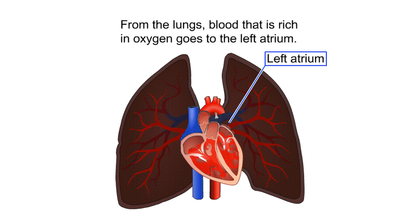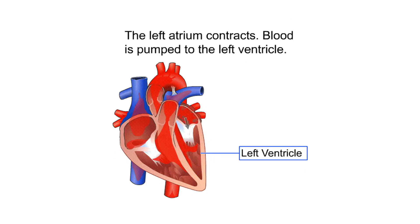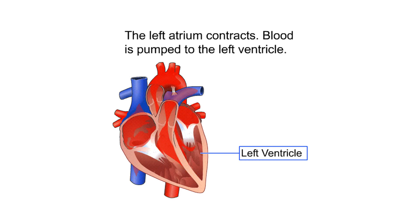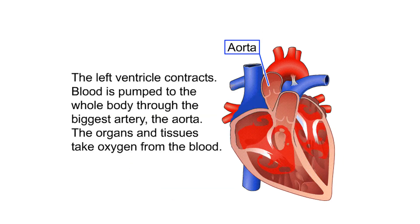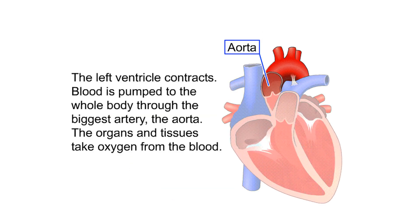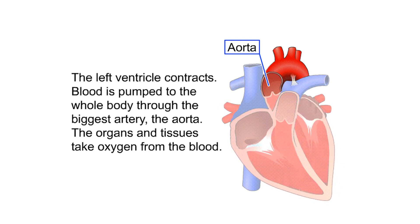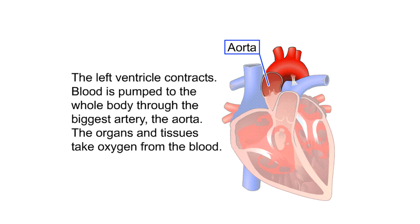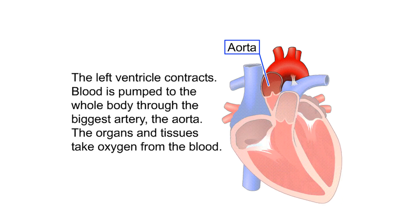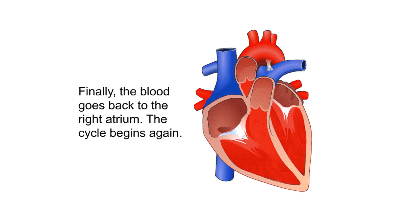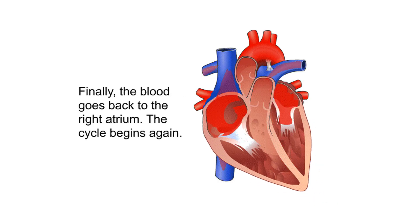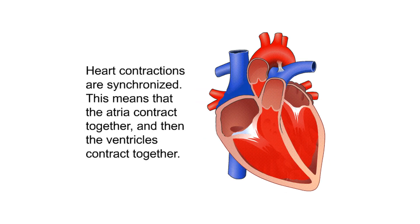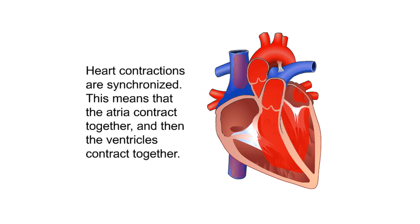In the lungs, the blood is loaded with the oxygen we breathe. From the lungs, oxygen-rich blood goes to the left atrium. The left atrium contracts, pumping blood to the left ventricle. The left ventricle contracts and pumps blood to the whole body through the biggest artery, the aorta. The organs and tissues take oxygen from the blood, and finally the blood returns to the right atrium, where the cycle begins again.